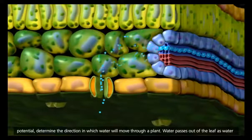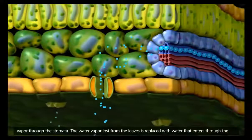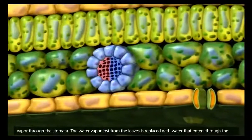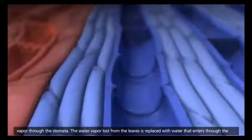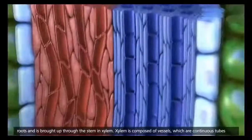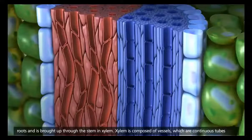Water passes out of the leaf as water vapor through the stomata. The water vapor lost from the leaves is replaced with water that enters through the roots and is brought up through the stem in xylem.